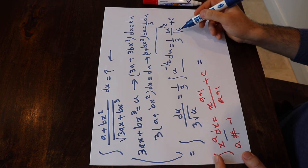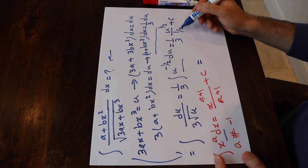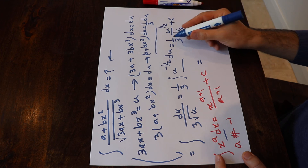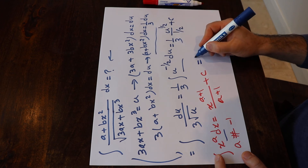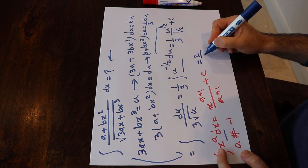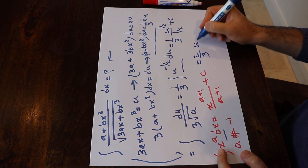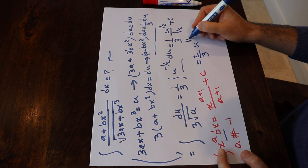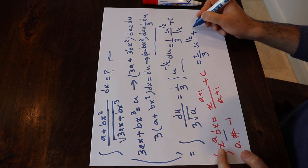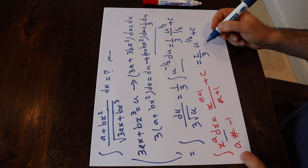This simplifies to 2 times 1/3, which is 2/3, times u to the power of 1/2, plus c.